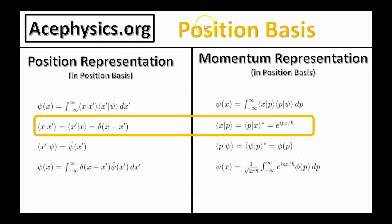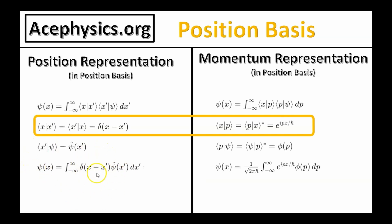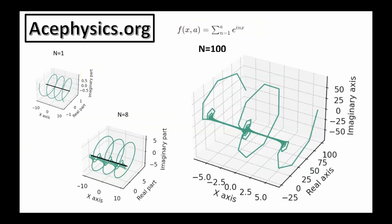On this slide is a summary of the position basis functions and the momentum basis functions, both written in the position basis. The position basis functions are the Dirac delta functions, the momentum basis functions are the complex exponentials, and any function can be written as a linear combination of the complex exponentials, just like any function can be written as a linear combination of the Dirac delta functions.